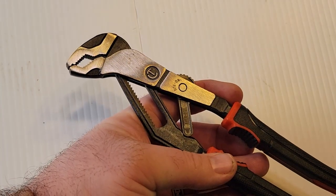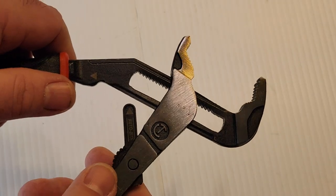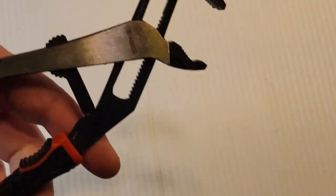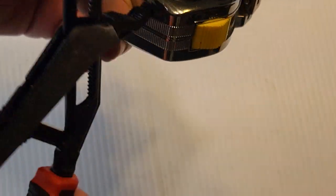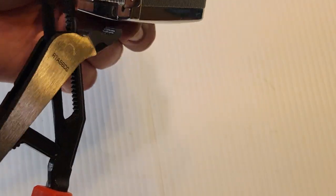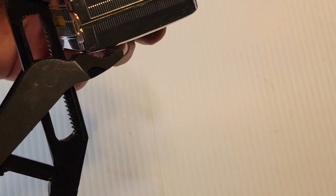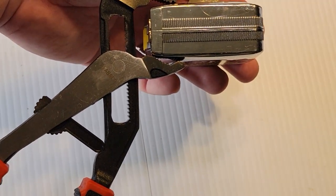They self-adjust with this little ratcheting thing. You basically separate them, and then as you put something into the jaws - tape measure here - as you squeeze, this fulcrum down here will tighten it up.